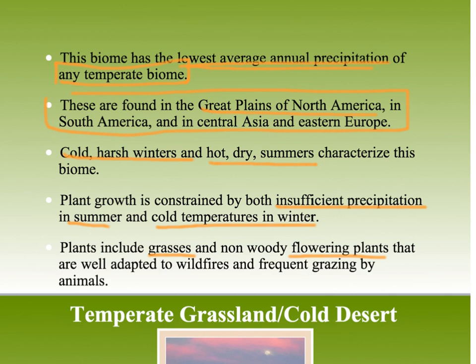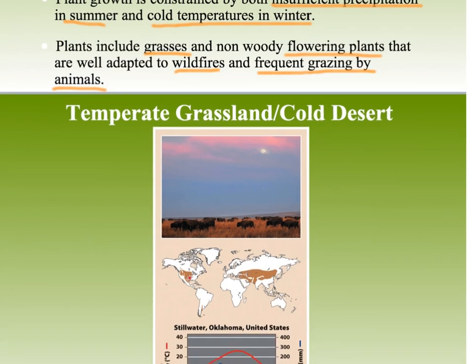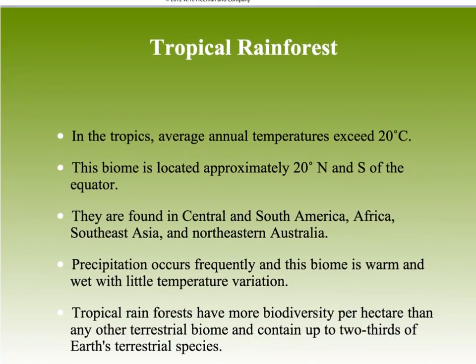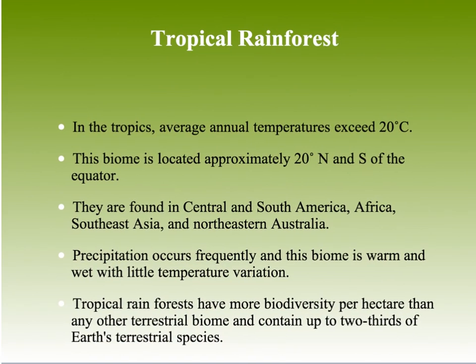This biome has a very high frequency of wildfires, and it is unique in that it has frequent grazing by animals — long ago, American bison were frequent grazers in this area. Here's the graph and picture: you can see bison grazing in the grassland. It's located in the United States, parts of Russia, Europe, and the Middle East. It has a 12-month growing season but not a whole lot of growth throughout the year.